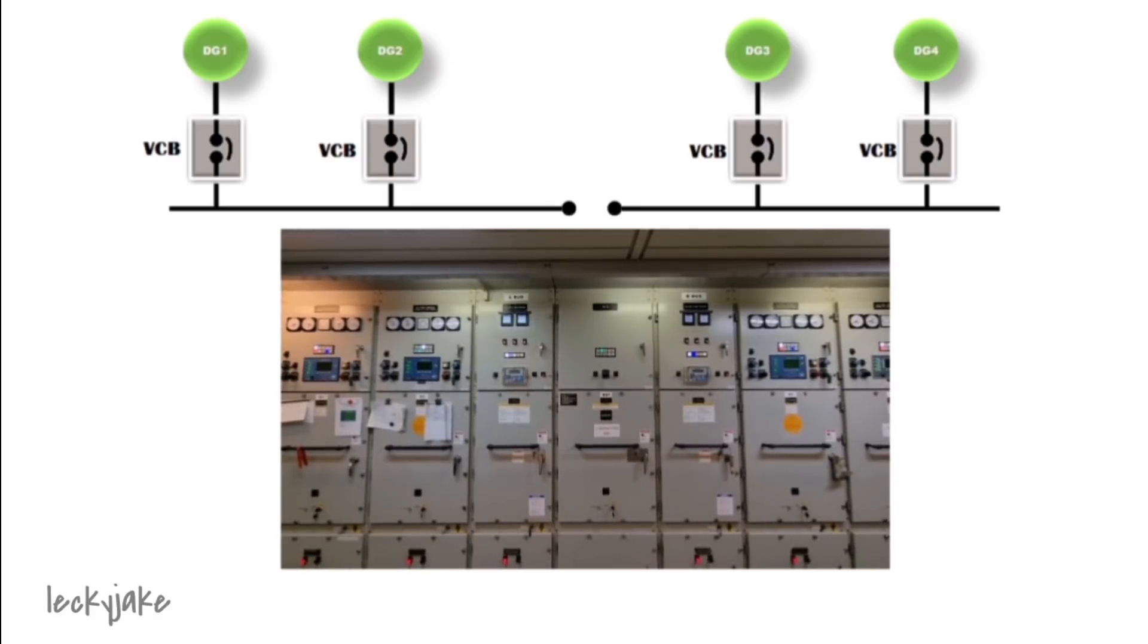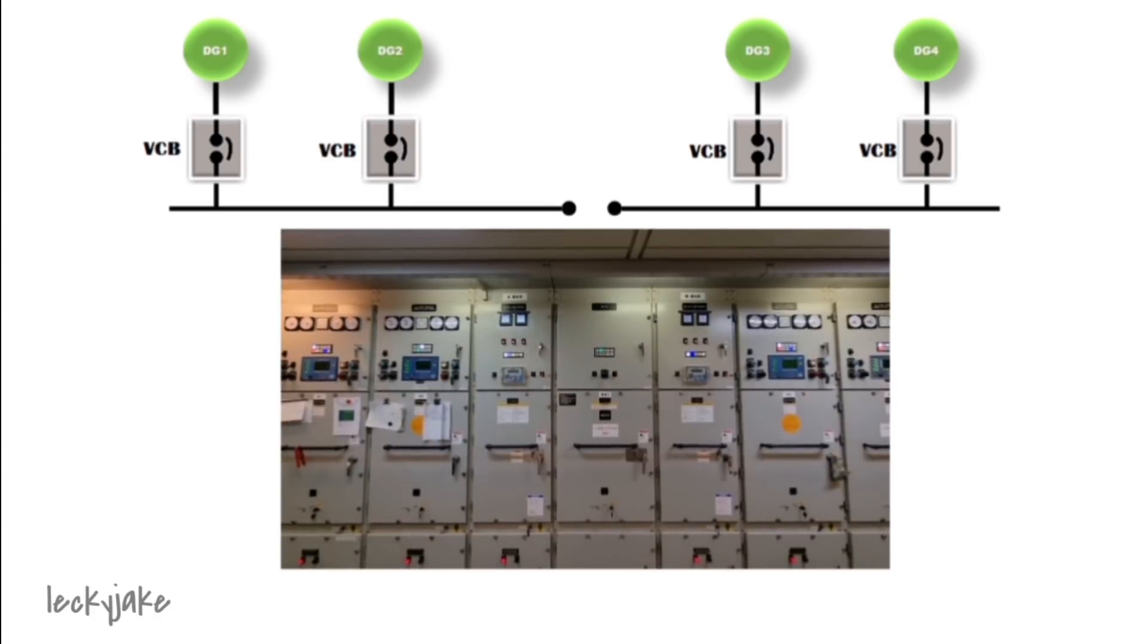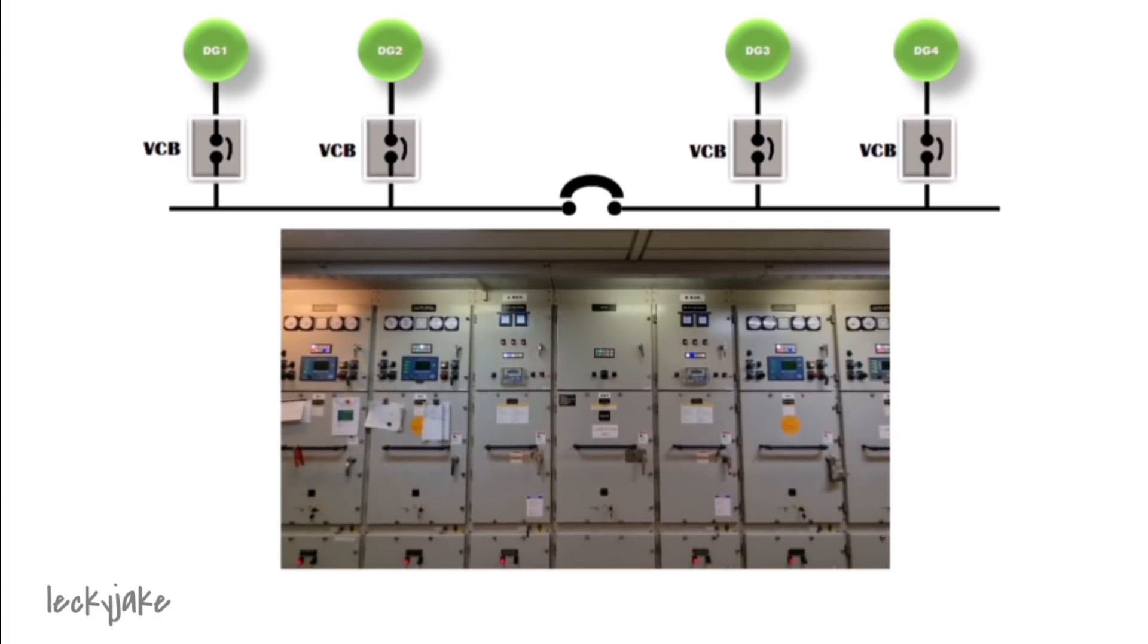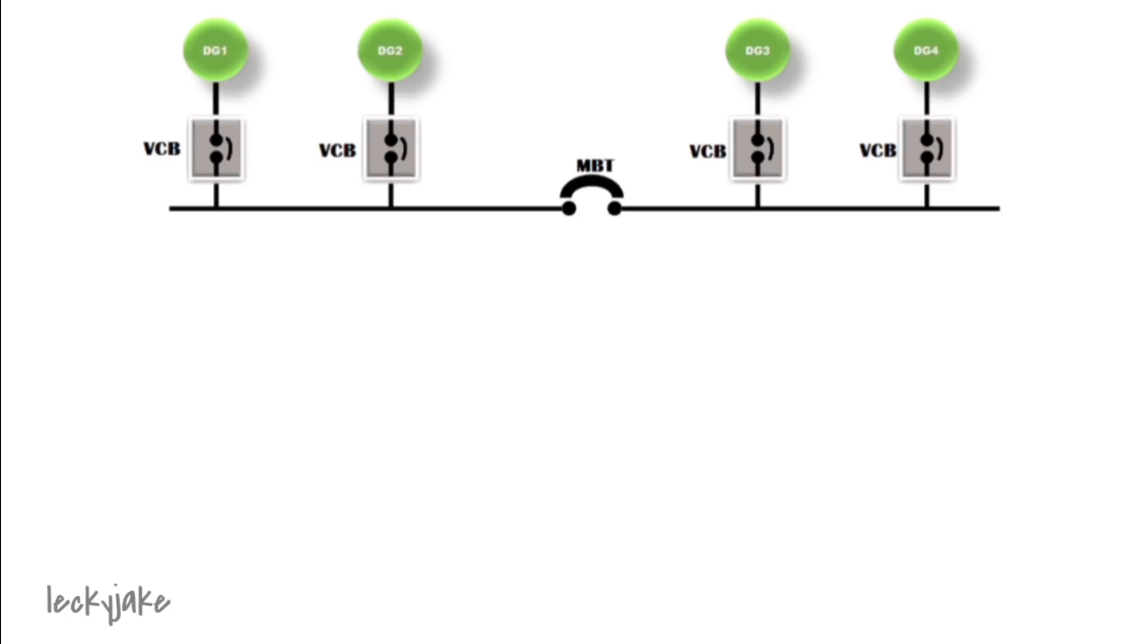But the bus bar is separated into two groups, the bus bar A and B which is being separated by a main bus tie. The main bus tie is a vacuum circuit breaker which is normally closed. The function of this main bus tie is to have a separation between these groups so that we can still service the other part of the main switchboard whenever required.